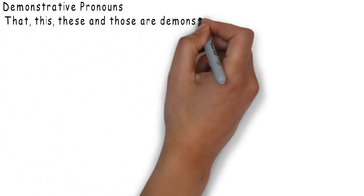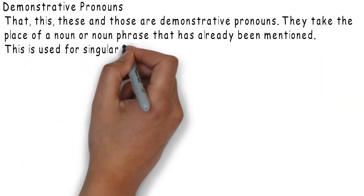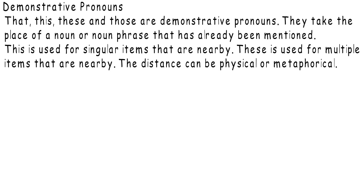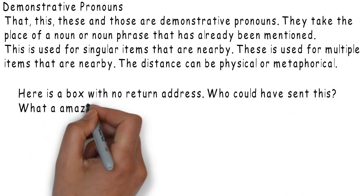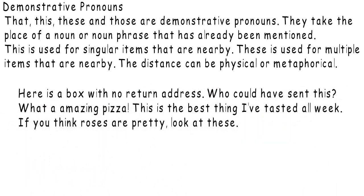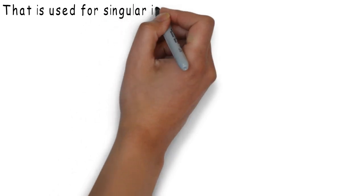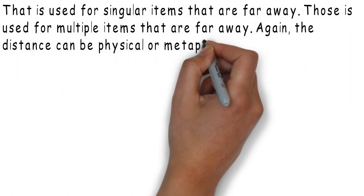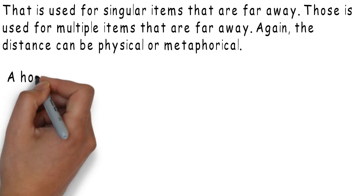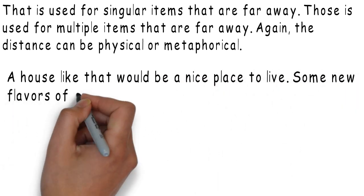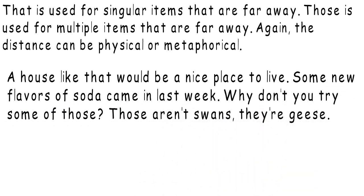Demonstrative pronouns: that, this, these, and those. They take the place of a noun or noun phrase that has already been mentioned. This is used for singular items that are nearby. These is used for multiple items that are nearby. The distance can be physical or metaphorical. For example: 'Here is a box with no return address — who could have sent this?' 'What an amazing pizza — this is the best thing I've tasted all week.' 'If you think roses are pretty, look at these.' That is used for singular items that are far away. Those is used for multiple items that are far away. 'A house like that would be a nice place to live.' 'Why don't you try some of those?' 'Those aren't swans, they're geese.'